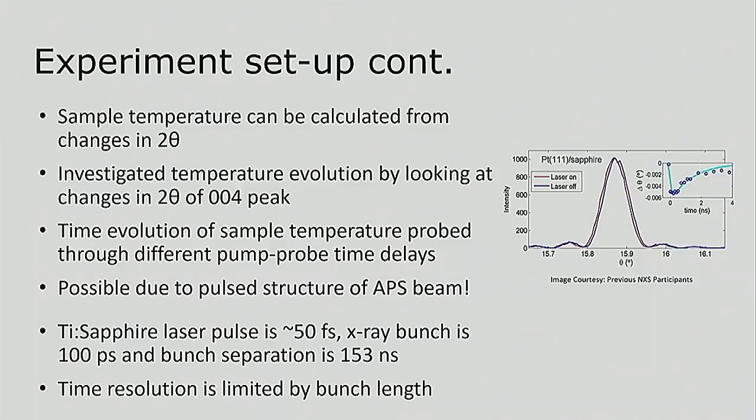These are all on very fast timescales, though, nanoseconds, I think we looked at. And this is only possible because of the pulse structure of the APS beam. So if it was a continuous beam, you wouldn't be able to do any of this experiment without some more complicated choppers or something. So there's a range of different timescales we looked at in this experiment. So the laser pulse is super fast. It's 50 femtoseconds. And then the length of an x-ray bunch is 100 picoseconds. And the separation between the bunches is about 150 nanoseconds. So there's kind of three different timescales there. And the resolution of this technique is limited by the x-ray bunch length, which is 100 picoseconds.